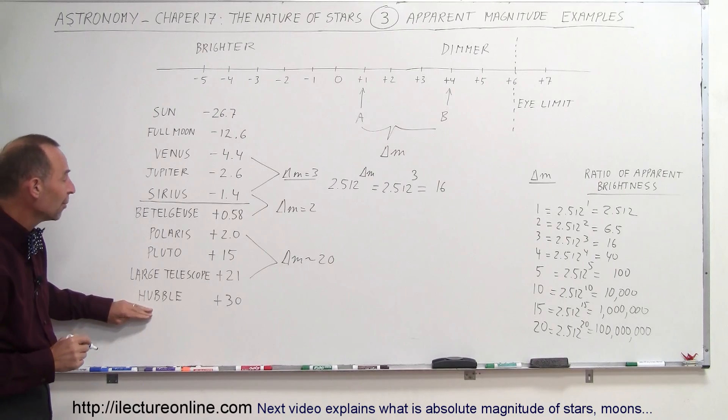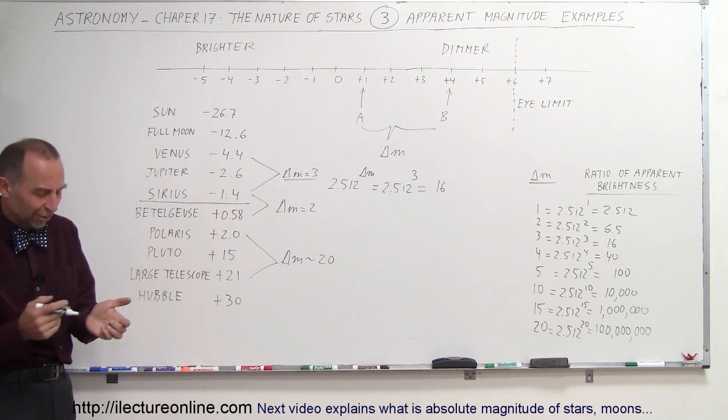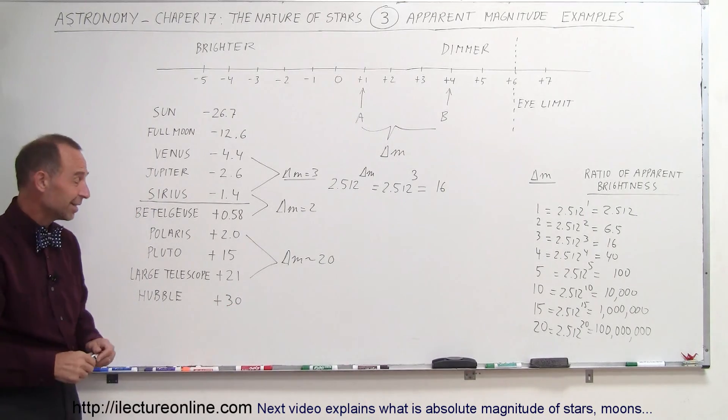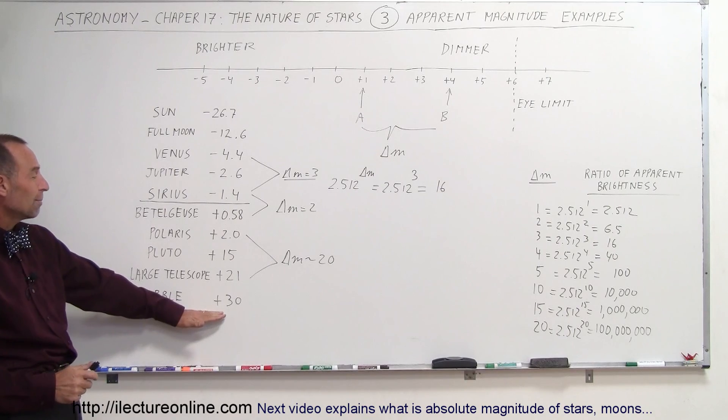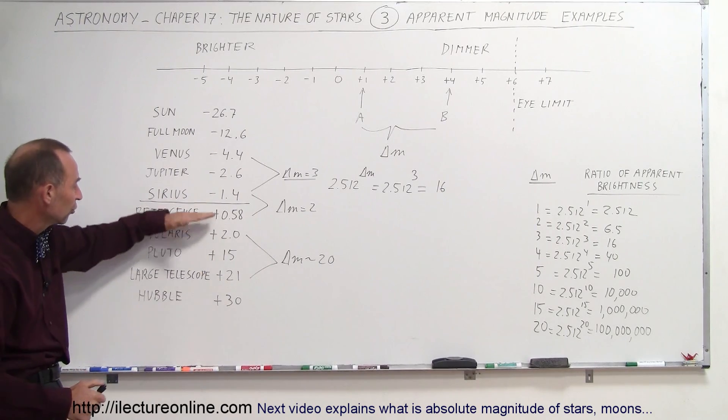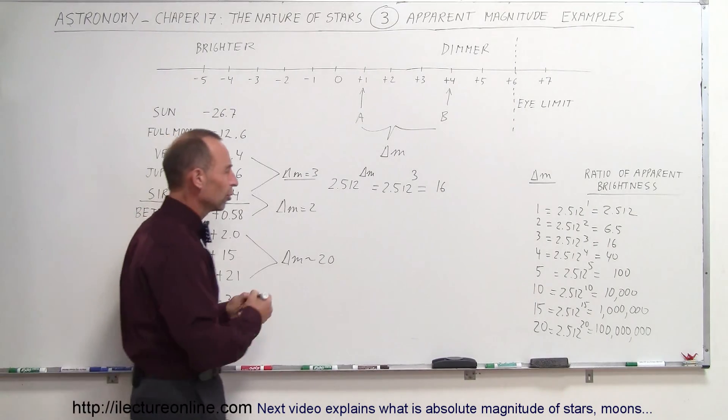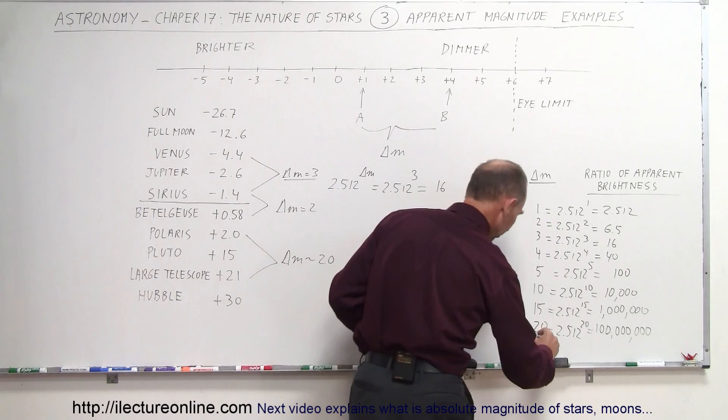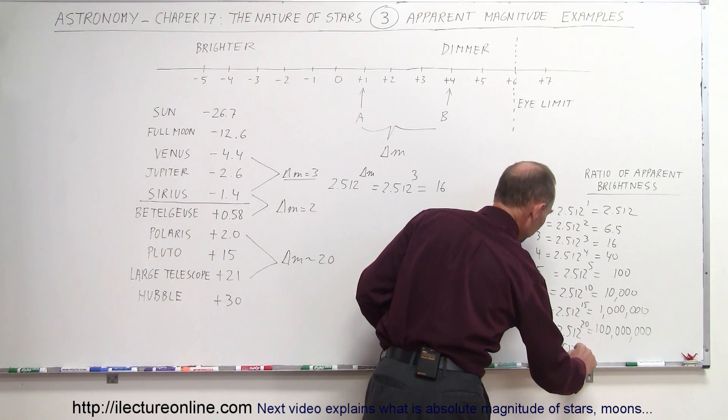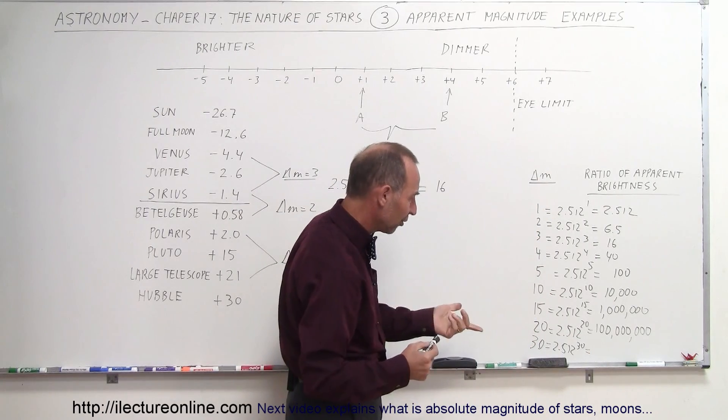And then of course Hubble is the champion of them all. Notice it can see objects to a dimness, or we call it apparent brightness, at plus 30 magnitude. The difference between Betelgeuse and Hubble is 30 magnitudes. What would 30 magnitudes signify? Put another row in there. 30 magnitudes would be 2.512 to the 30th power and that would be another four zeros behind that.